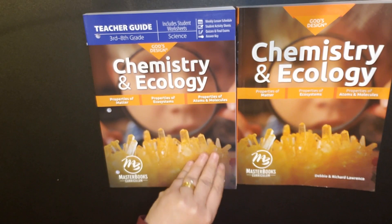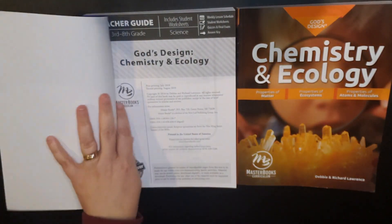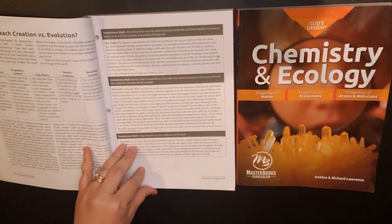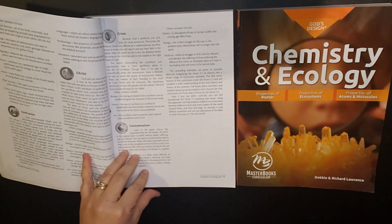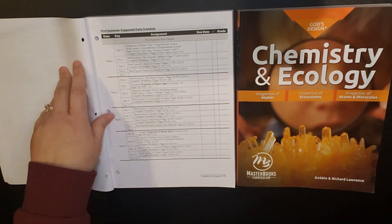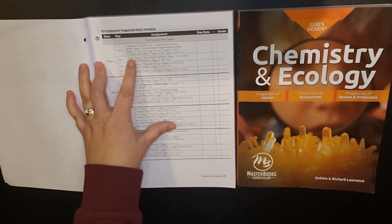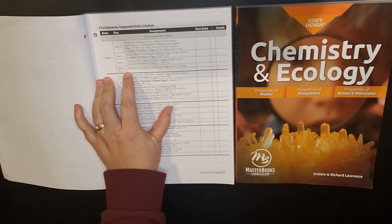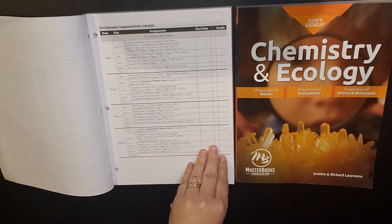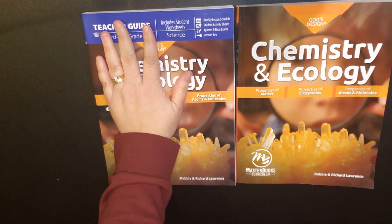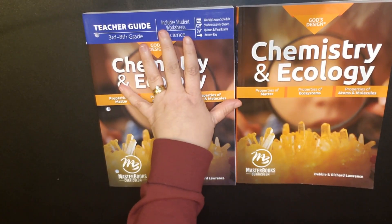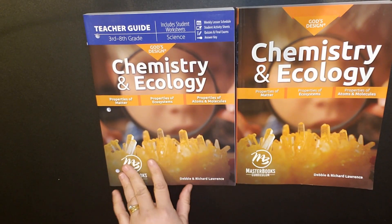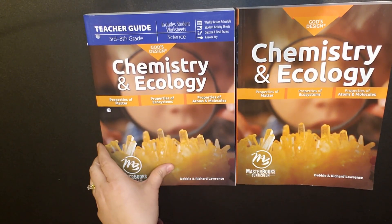If we look just really quickly inside the teacher's guide, we can see that there is a daily schedule. This is scheduled to be a one-year course, doing the science lessons four days per week. Within the teacher's guide it includes worksheets, quizzes, and final exams, your answer key, and some additional information that we're going to look at shortly.